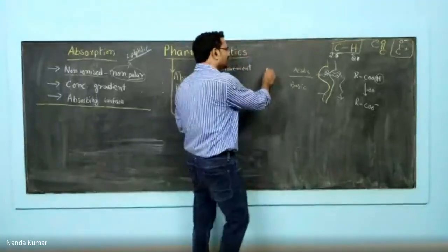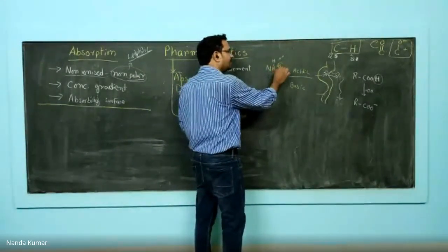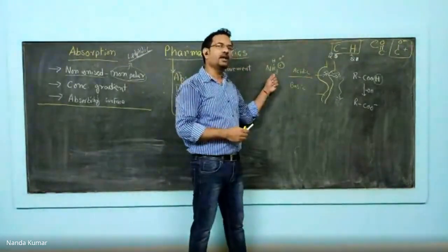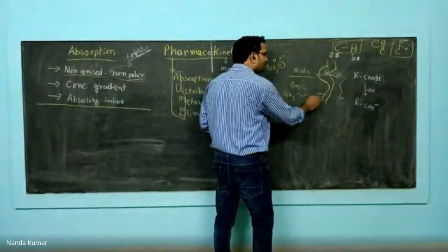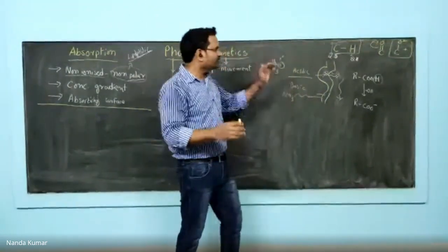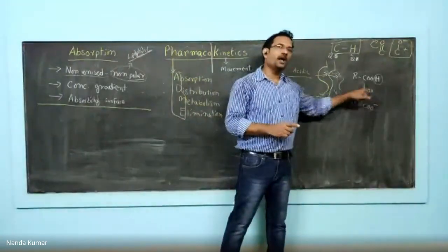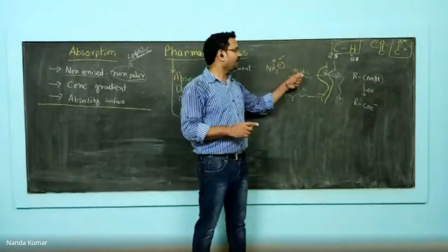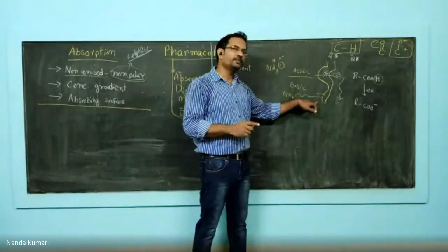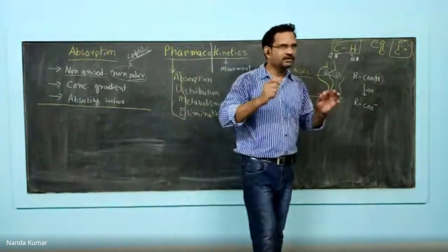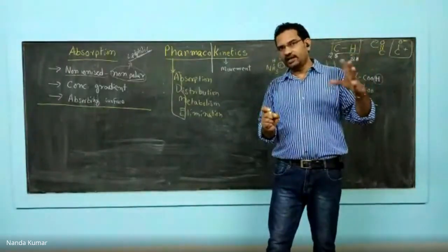So remember: acidic drugs get absorbed from acidic pH. For basic drugs, take ammonia — in the presence of acid it gains a proton and becomes charged, so basic drugs in acidic pH generate ions and will not get absorbed. In basic pH, basic drugs remain unionized and get absorbed. The general rule: acidic drugs are absorbed from acidic pH compartments because they remain unionized; basic drugs are absorbed from basic pH environments because they remain unionized there.